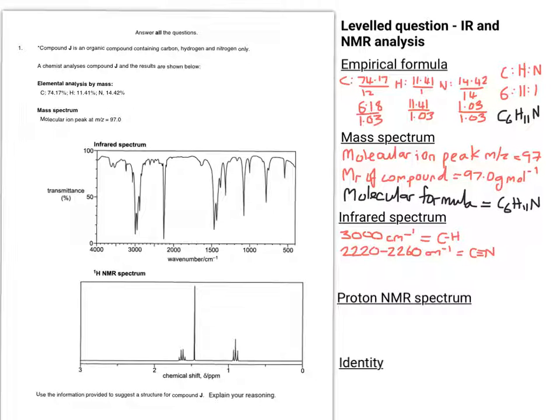So looking at the infrared spectrum, there's quite a strong peak that's just gone 2000. So 2220 to 2060 cm⁻¹ gives us the C≡N environment—that particular functional group, the nitrile functional group.